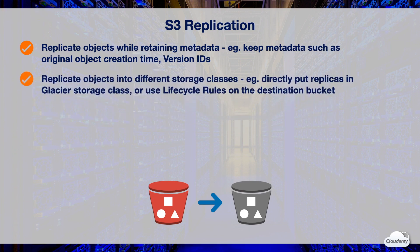S3 Replication allows you to replicate objects into different storage classes. You can use replication to directly put objects into S3 Glacier, Glacier Deep Archive, or another storage class in the destination bucket. You can also replicate your data to the same storage class and use lifecycle rules on the destination bucket to move your objects to a colder storage class after a certain time.